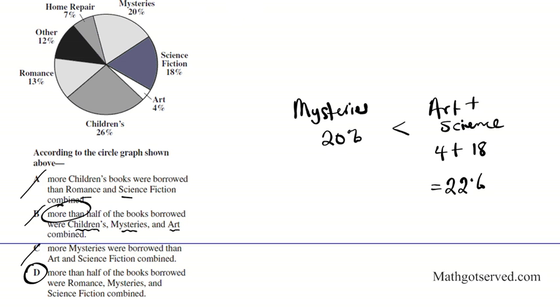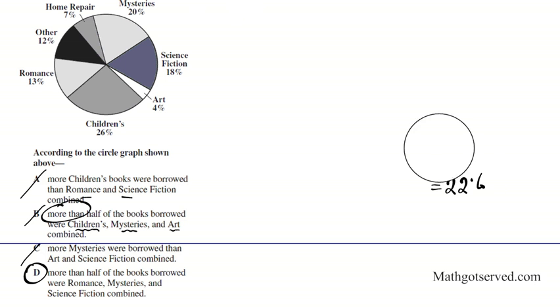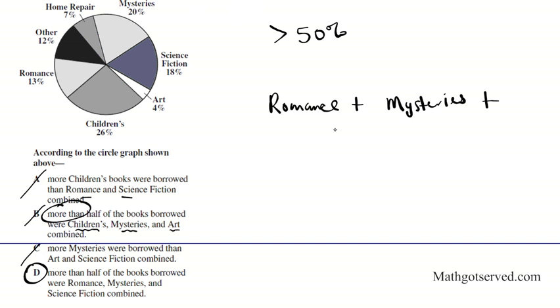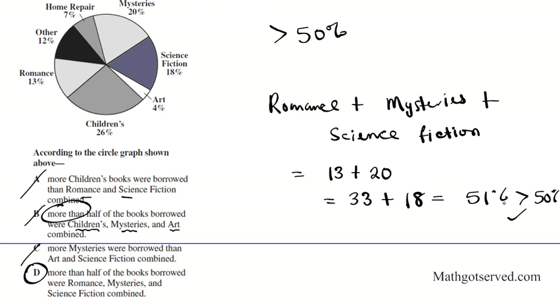So our answer should be Option D. But just to verify, let's take a look at what the question says. Option D says more than half of the books borrowed were romance, mystery and science. Remember more than half has to be greater than 50%. So if I add romance, I'm going to have romance is 13, mysteries plus 20. If I add these two, I'm going to have 33. And then for science fiction, science fiction is 18. And if I add it up, I'll end up with 51%. So 51% is clearly greater than 50. So this is accurate. So our answer is Option D.